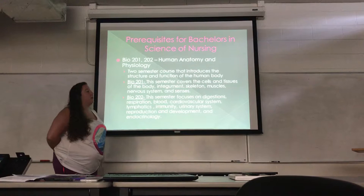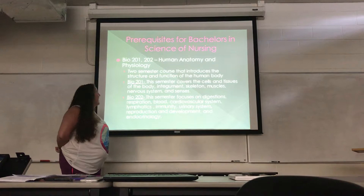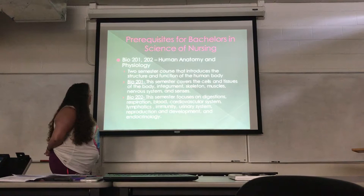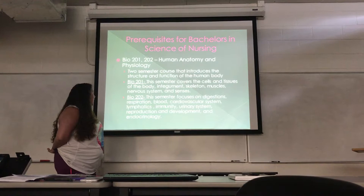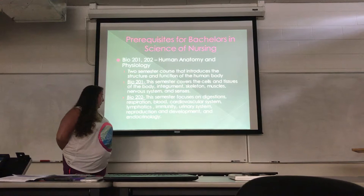The prerequisites required for a Bachelor of Science in Nursing start with biology. Bio 201 and 202 are anatomy and physiology, a two-semester course introducing the structure and function of the human body. Bio 201 covers cells and tissues, the skeleton, muscles, nervous system, and senses. Bio 202 focuses on digestion, respiration, blood, cardiovascular system, lymphatics, immunity, reproduction, development, and endocrinology.